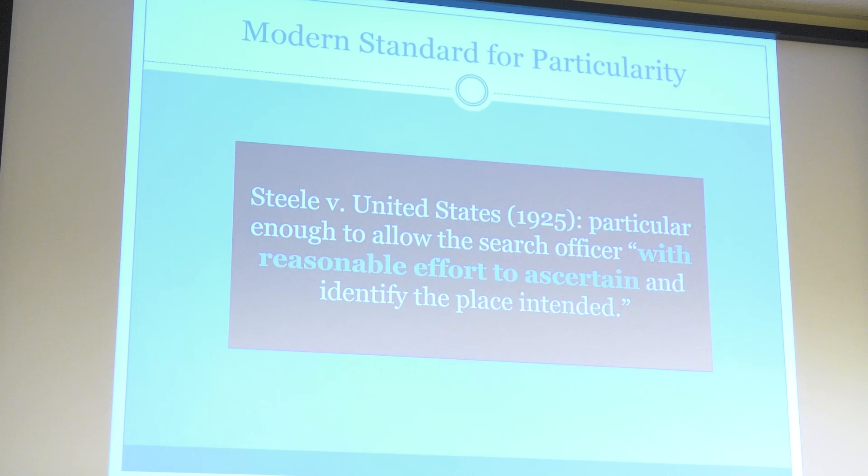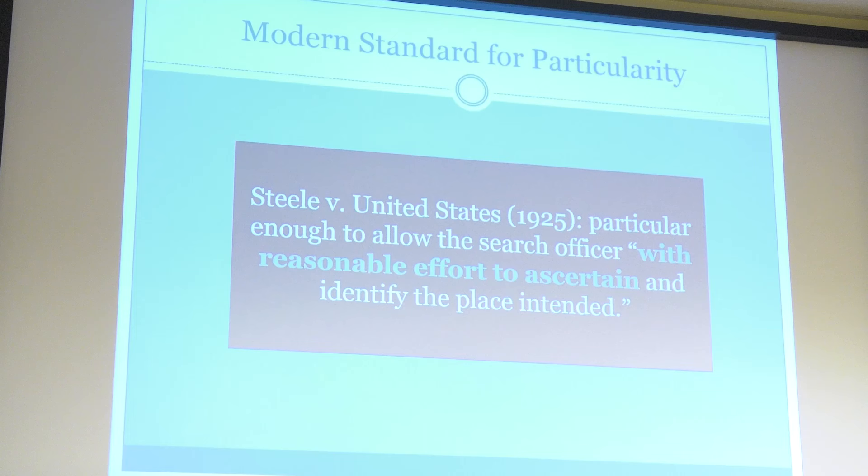The modern standard for particularity comes from Steele versus United States. You see this quoted over and over again — a very widely, really universally adopted standard in the state courts as well. The warrant has to be particular enough to allow the searching officer with reasonable effort to ascertain and identify the place intended. So that's the standard we're aiming for. An example of this standard being applied in a more modern context: an officer has a confidential informant make a controlled purchase of narcotics, and the CI comes back and says, I bought the illegal drugs in the last apartment of two on the left — the second door on the left. So they go and get the search warrant that says second door on the left, and also give the number of the apartment.